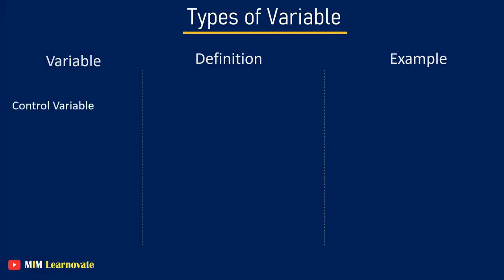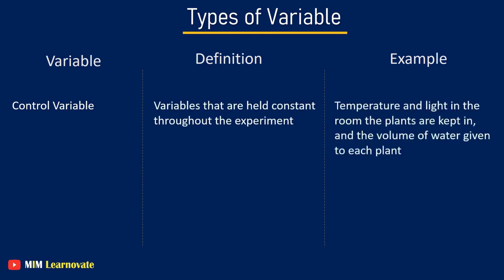Control variable. Variables that are held constant throughout the experiment. For example, the temperature and light in the room the plants are kept in and the volume of water given to each plant.